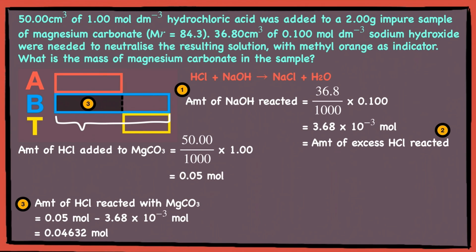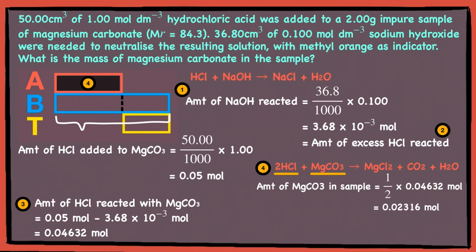Lastly, we want to find amount of A, which is the magnesium carbonate. And because there was a chemical reaction that took place, we need to write out the equation. Since 2 mols of hydrochloric acid reacts with 1 mol of magnesium carbonate, the amount of magnesium carbonate reacted can be found by dividing 0.04632 mols by 2. And finally, to answer the question, by finding the mass of the magnesium carbonate in the sample, we just need to multiply it by the MR, which is given in the question.